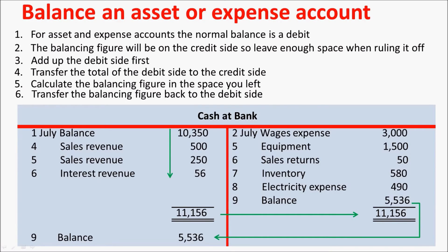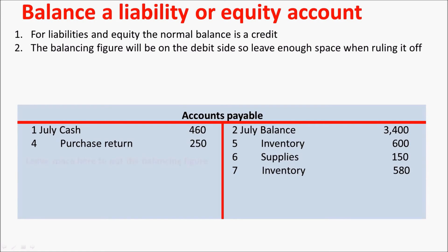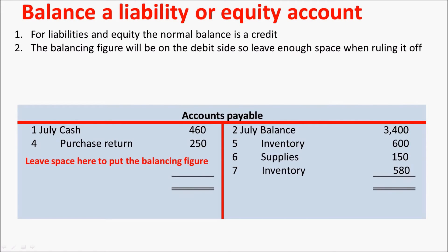If you are balancing liability or equity accounts, it is exactly the same, but everything is on the opposite side. Liability and equity accounts normally have a credit balance, so the balancing figure is going to be on the debit side. So leave enough space on the debit side when you are ruling off.